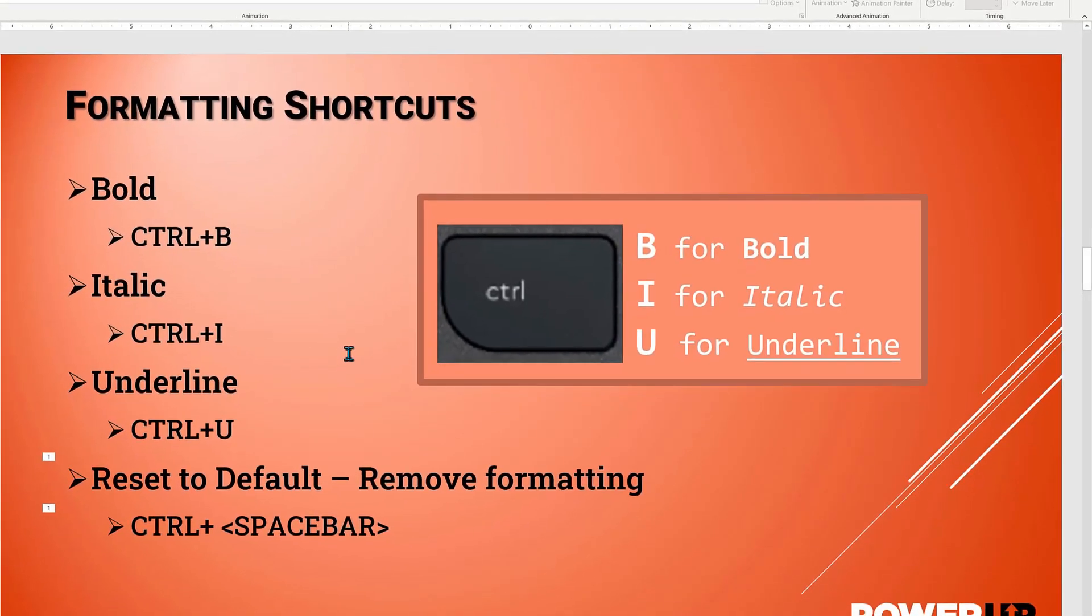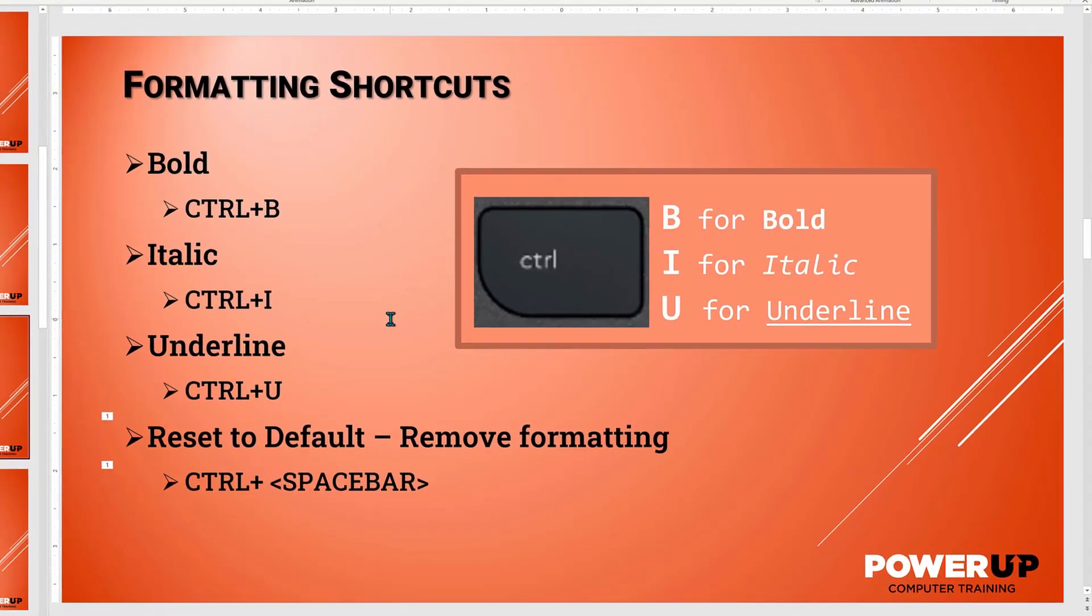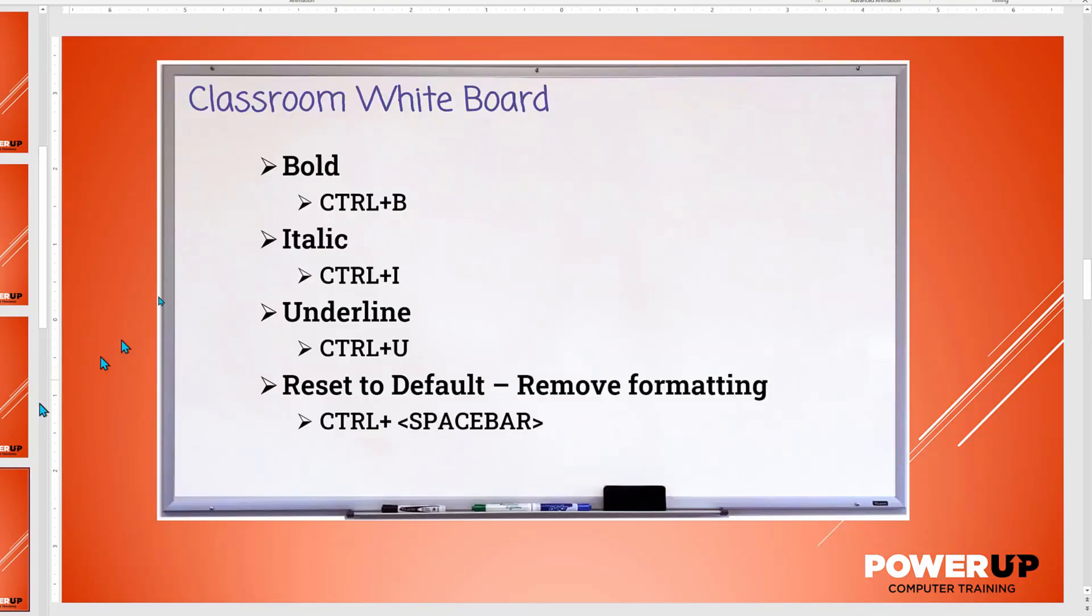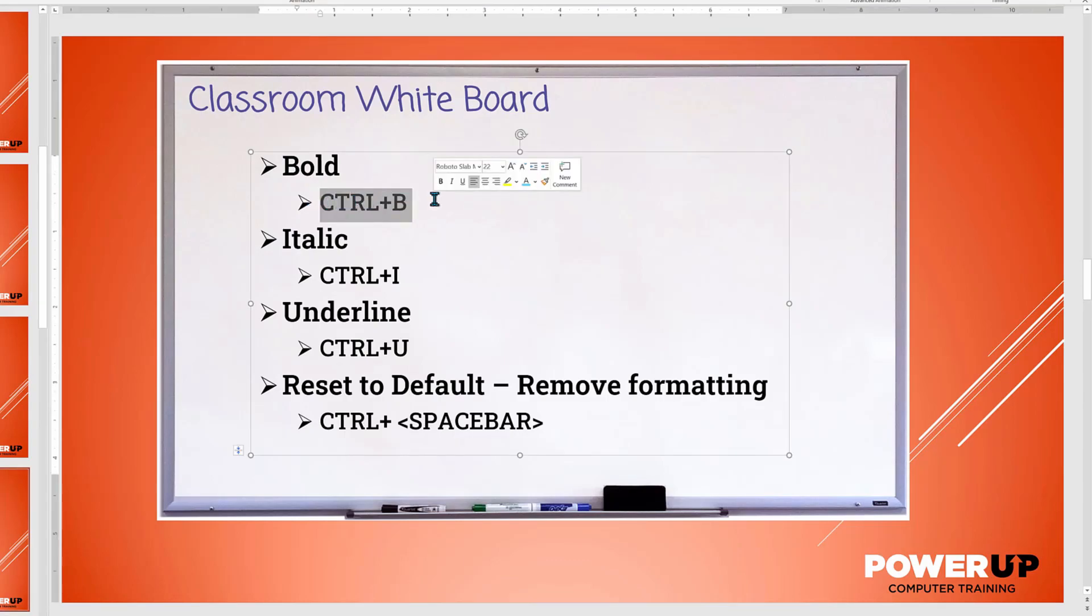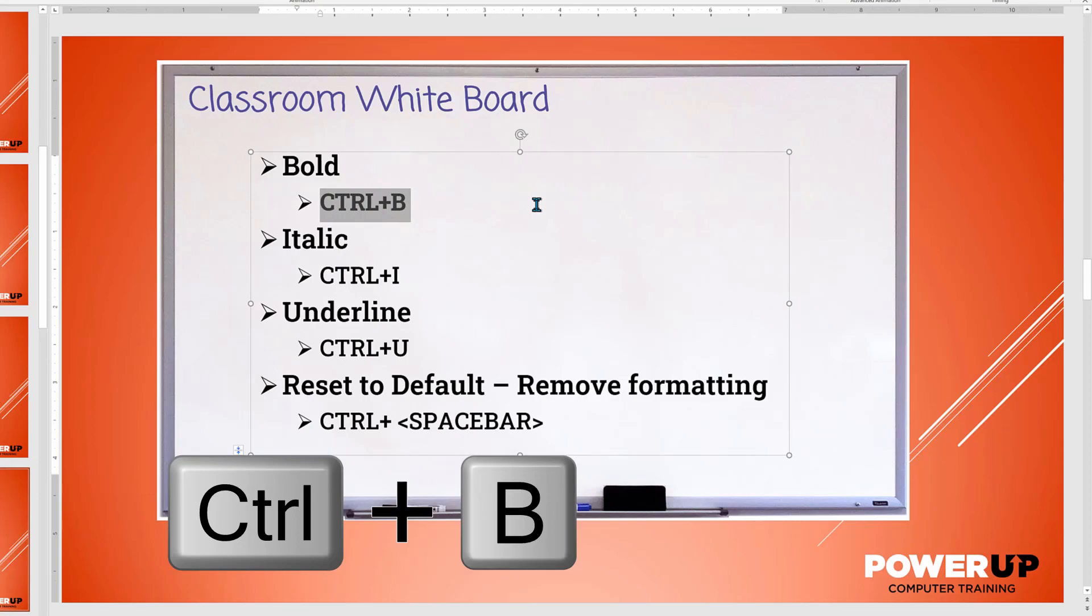Now let's go to formatting shortcuts. The first three are quick and easy for bold, italic, and underline. And then I will demonstrate the ever so useful remove formatting command. So use your mouse to select the text you want to format. Here we're going to highlight control plus B, and then I'll hold down the control key and press the letter B to bold it. And I'll do the same for control I for italic and control U for underline.